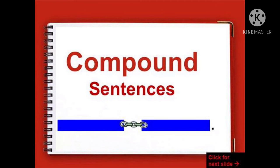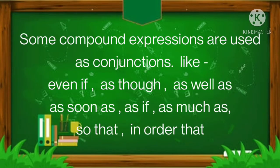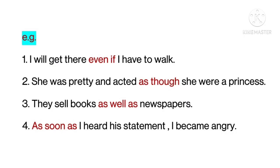Now let's see what compound conjunctions are. Some compound expressions are used as conjunctions. They are: even if, as though, as well as, as soon as, as if, as much as, so that, in order that. For example: I will get there even if I have to walk. She was pretty and acted as though she were a princess. They sell books as well as newspapers. As soon as I heard his statement, I became angry.